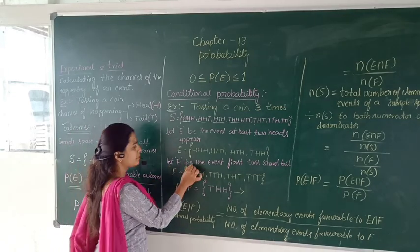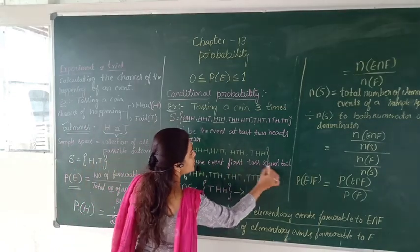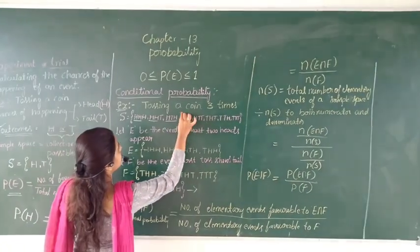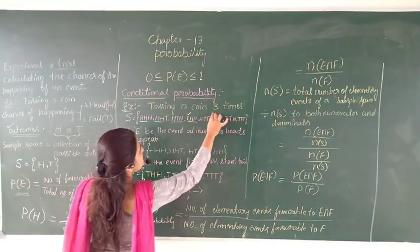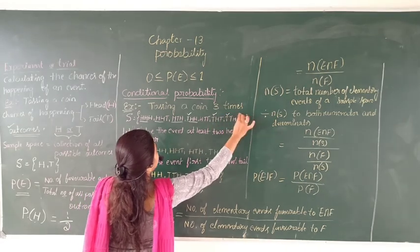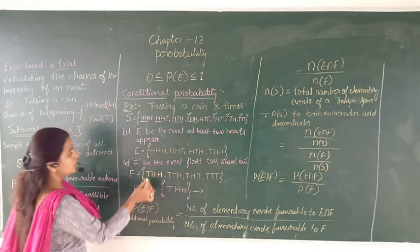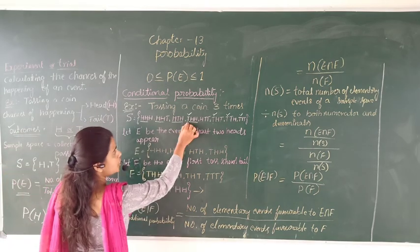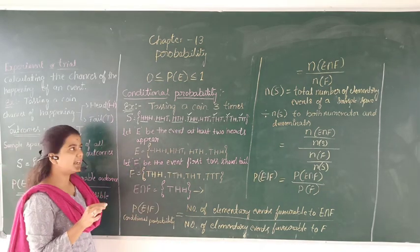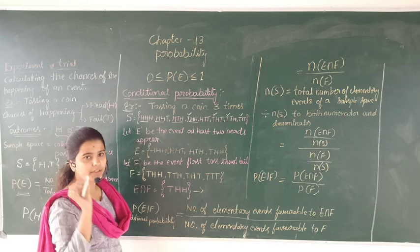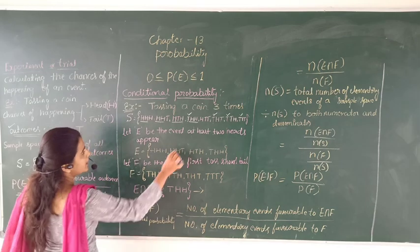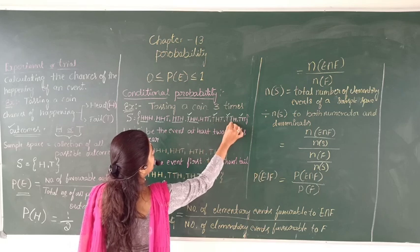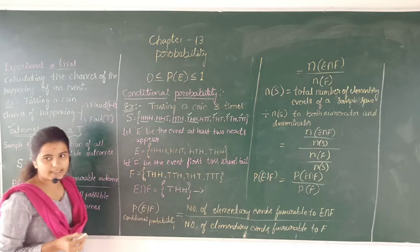Let F be the event that the first toss shows tail. So wherever the tail appears first — that gives us outcomes two, three, and four from our list. The event F contains outcomes where the first toss is tail: tail-head-head, tail-head-tail, tail-tail-head, and tail-tail-tail.